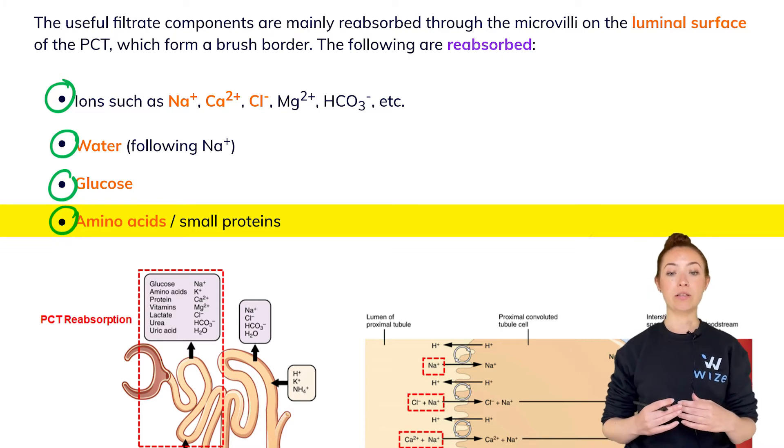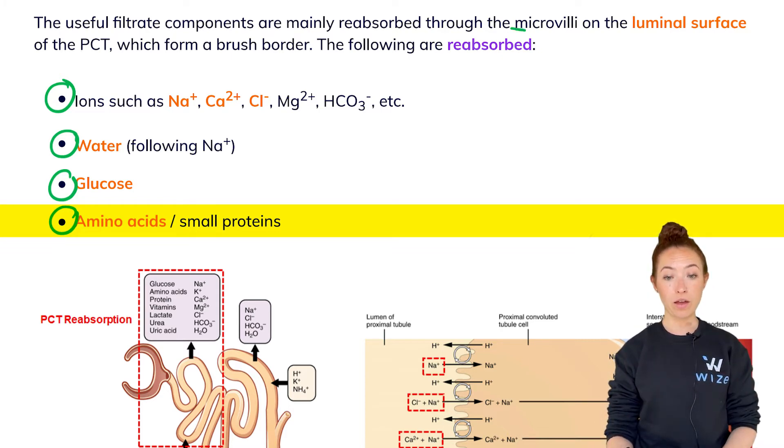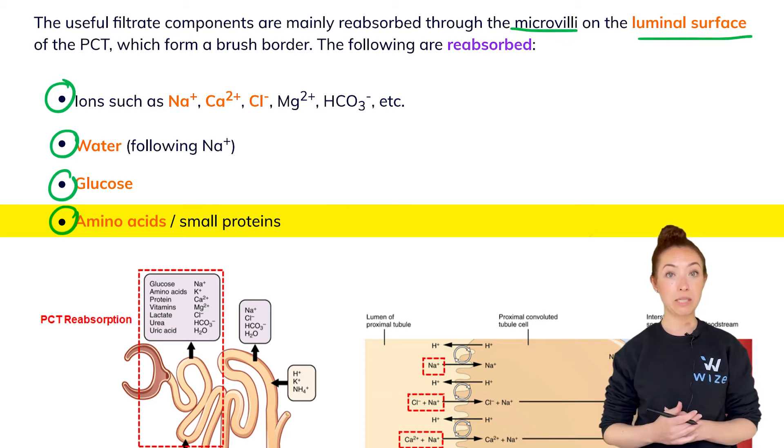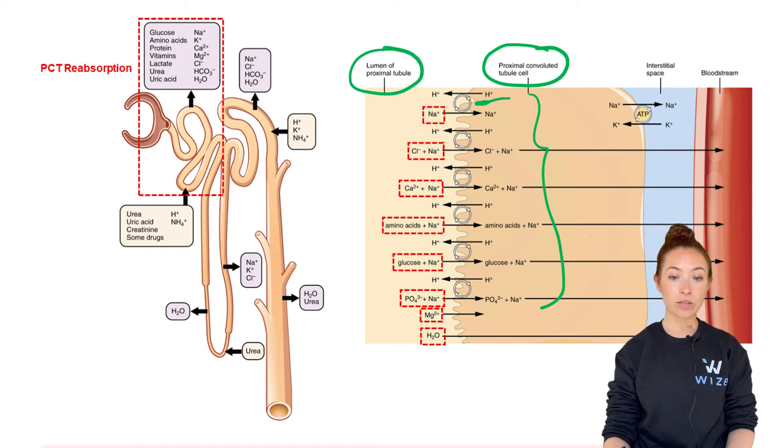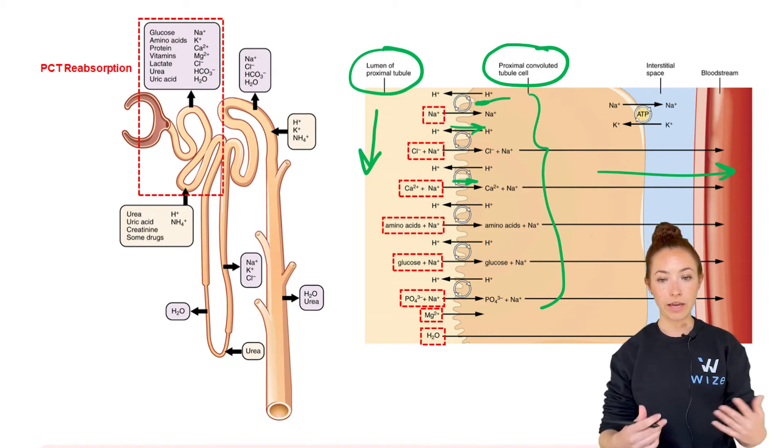So these components are reabsorbed through microvilli on the luminal surface of the cells of the PCT. This is a cell of the proximal convoluted tubule. Notice how it has these microvilli to increase surface area. That's always why microvilli are present. And there are a bunch of transporters that are really lined up here on the luminal surface. This is the lumen where the filtrate is going through and we call therefore this side of the cell the luminal surface. Notice how all these things are being reabsorbed here and then they're passed onto the blood through the other side of the cell, the apical side of the cell.